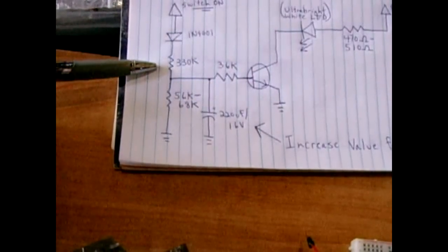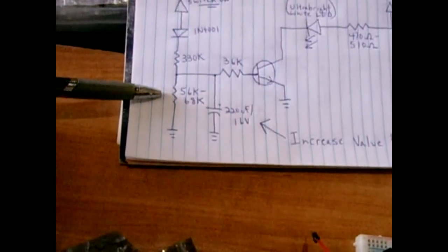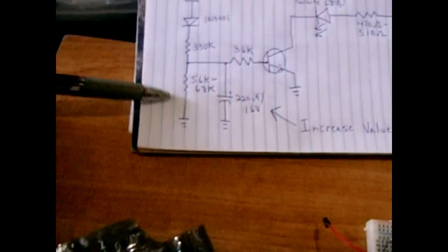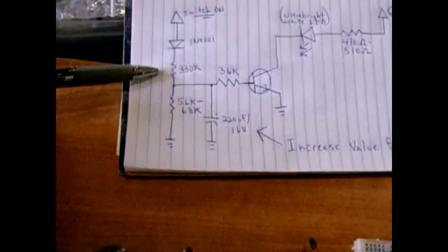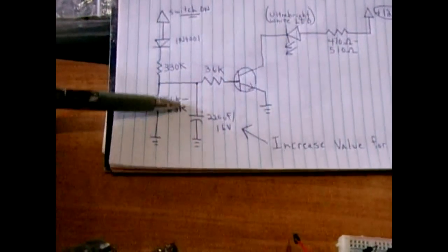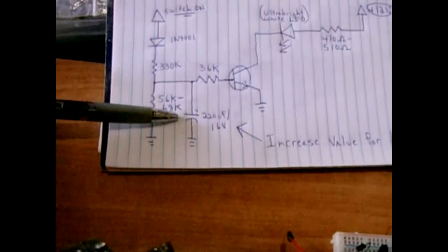After the 330k ohm it will flow through a 56k to 68k ohm to ground. At the junction of the 330k and the 56k you will come off with a 220 microfarad capacitor 16 volts.